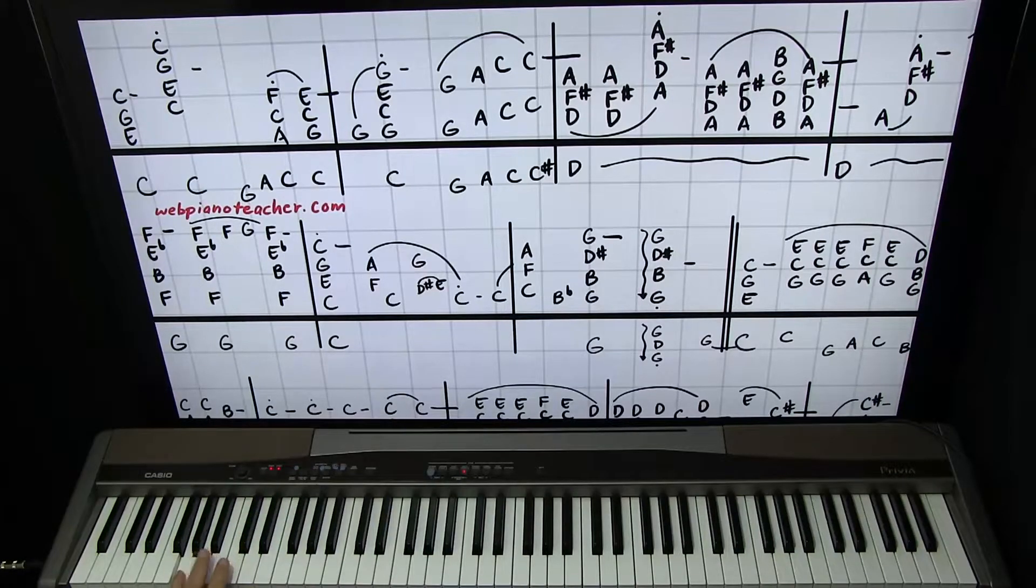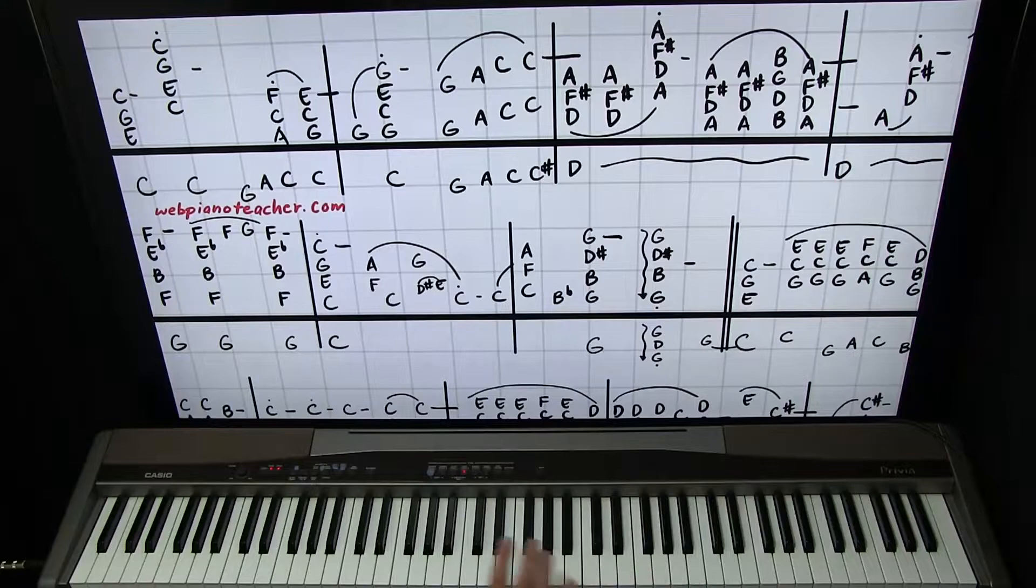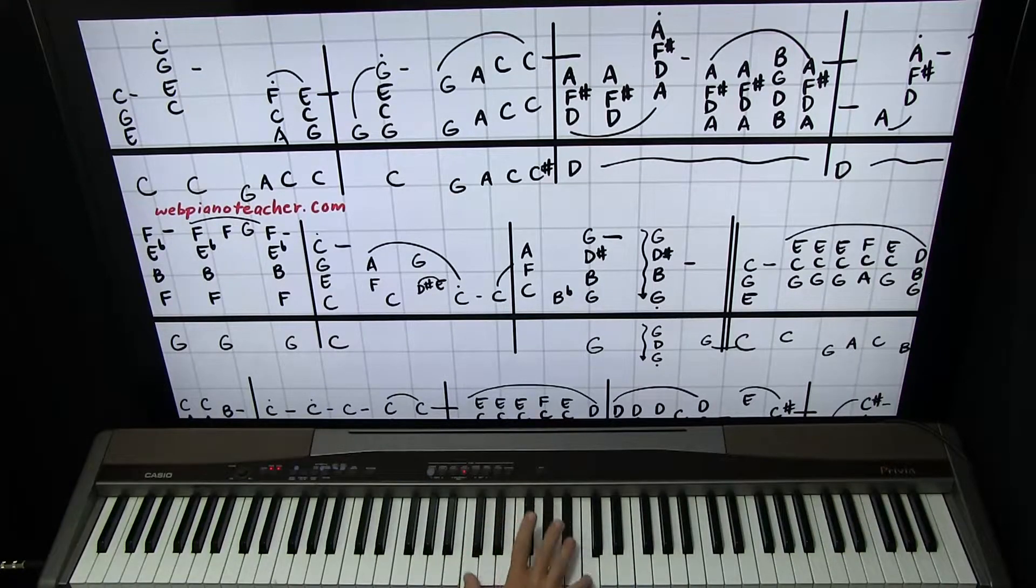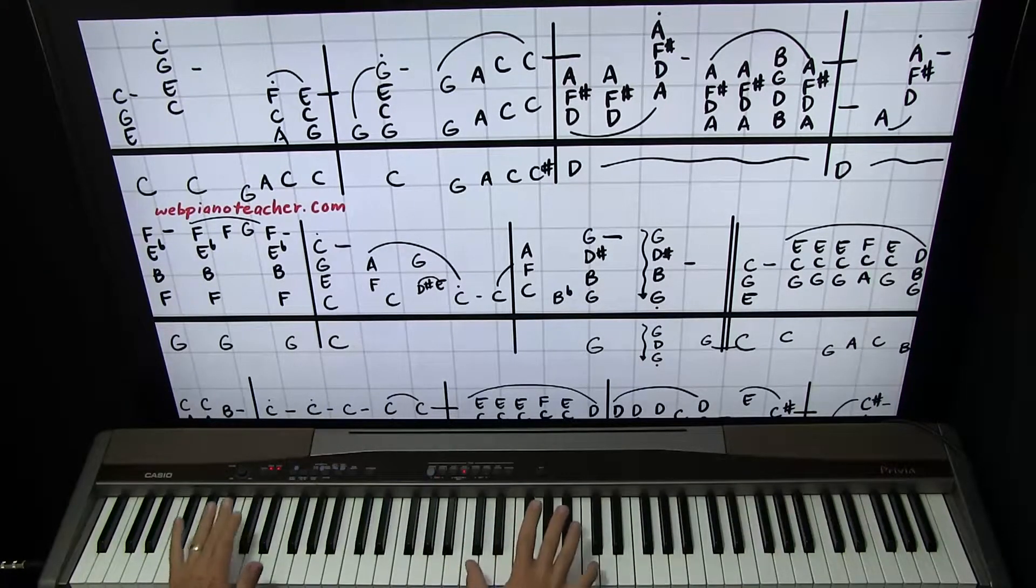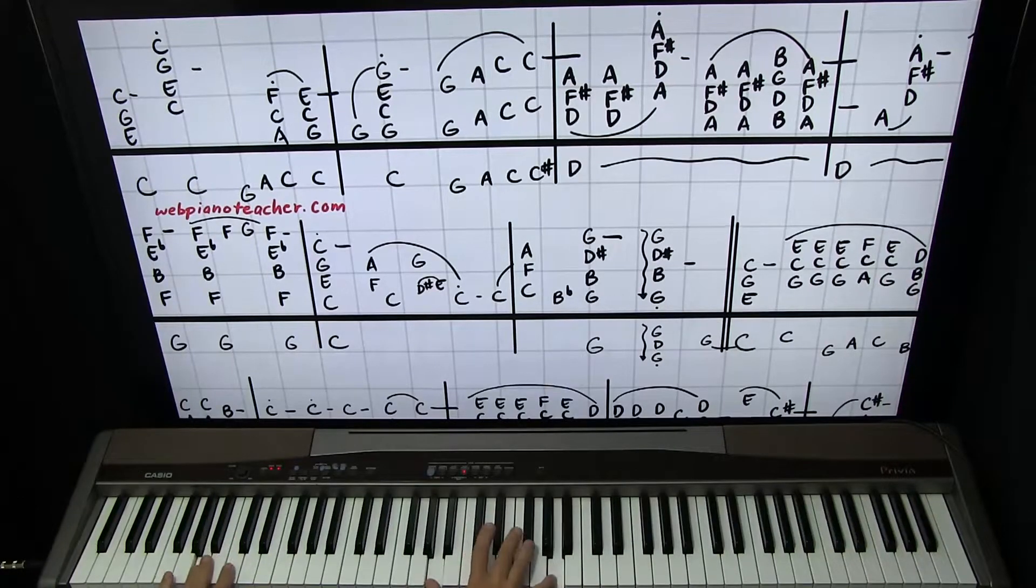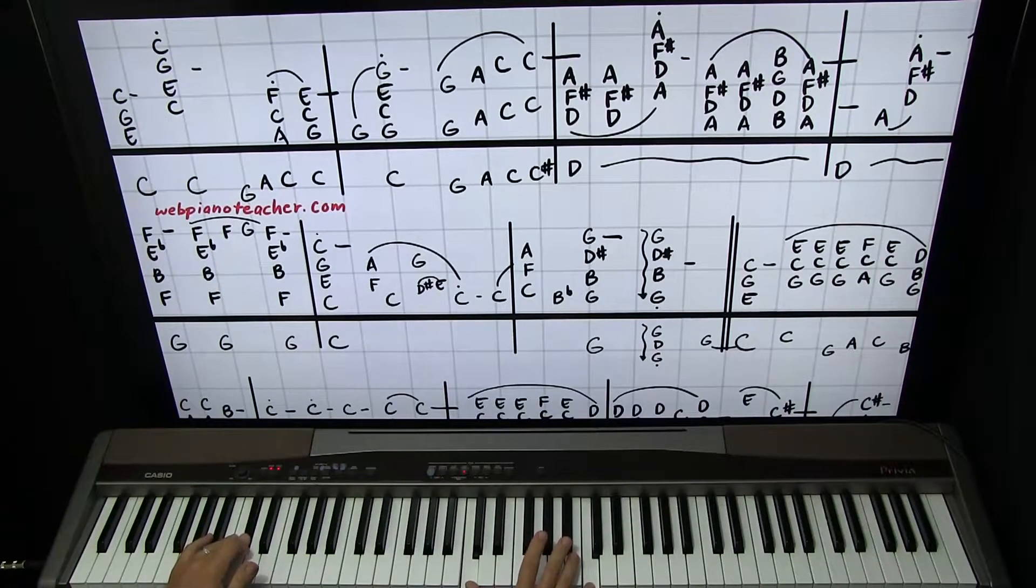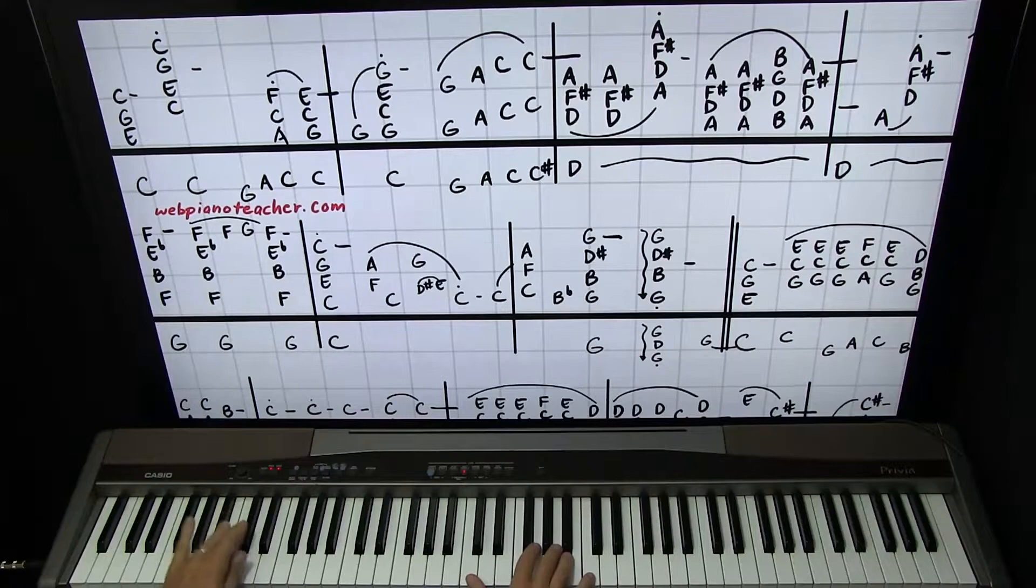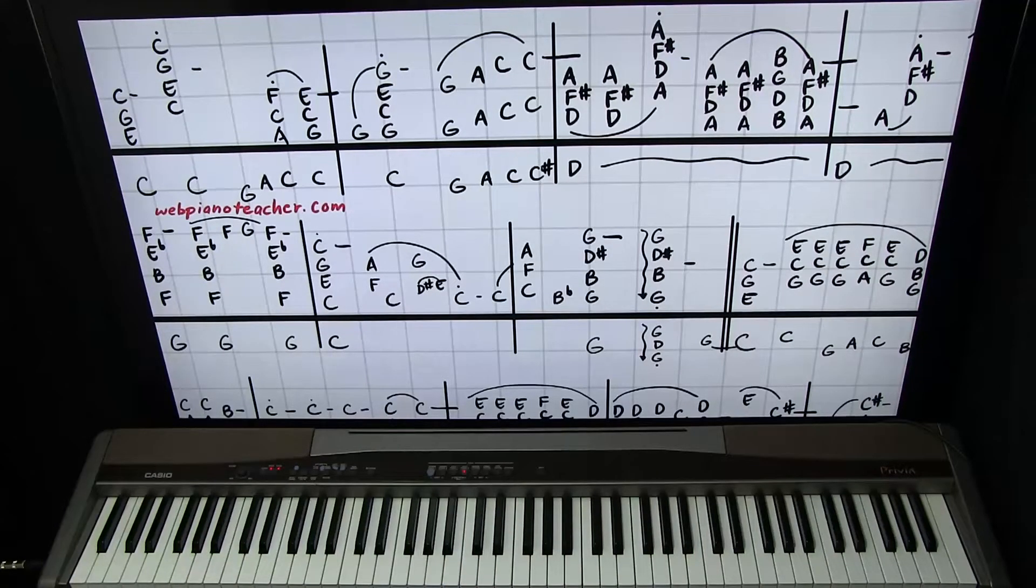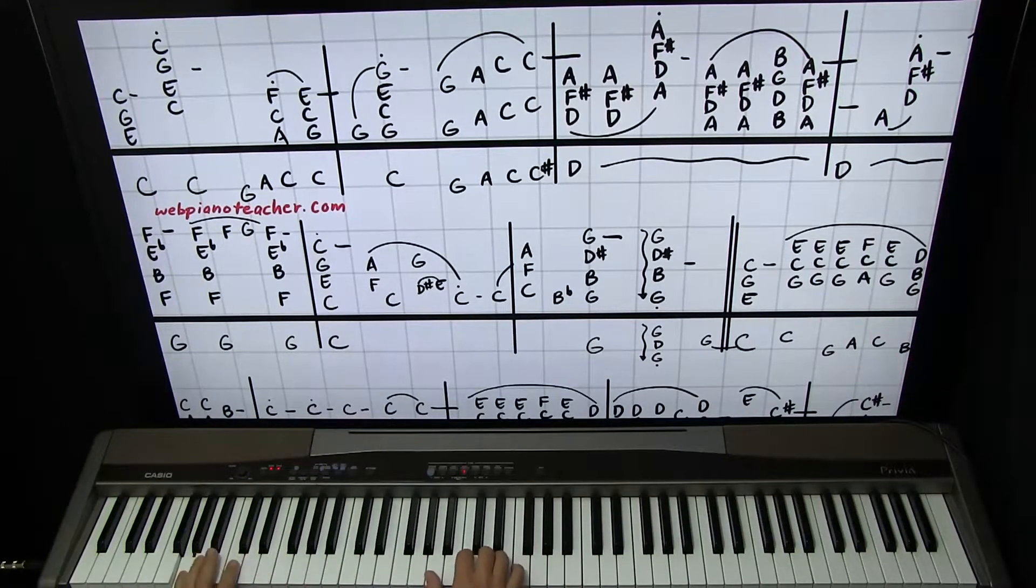The bass is going to go G, A, C, C sharp, D, 5, 4, 1, 2, 1. The right hand is going to have octaves. G, A, C, C. So. If you're going very slow to learn it, you might have to let that go, oh that sounds wrong. But it's just. So it'll sound just fine when you're going up to tempo. So from the beginning. 1, 2, 3.